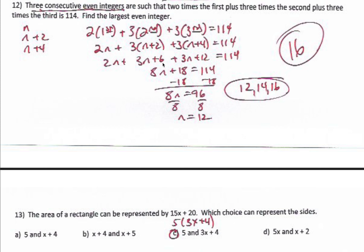Distributing the three: 3n plus 6, and distributing the other three: 3n plus 12. Combining like terms — 2n, 3n, 3n gives eight n's altogether. Six and 12 make 18. Subtracting 18 from both sides: 8n equals 96. Dividing by 8, n is 12. So the three consecutive even integers are 12, 14, and 16.